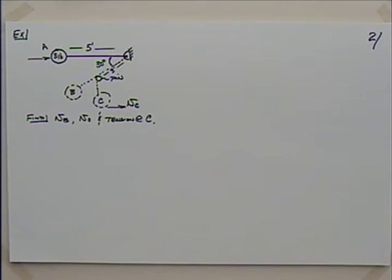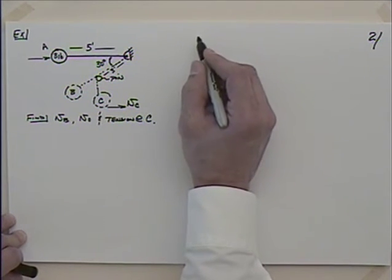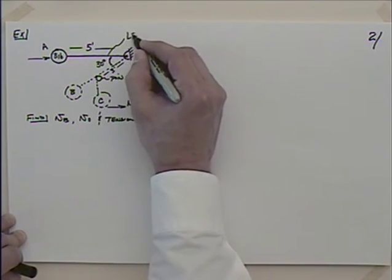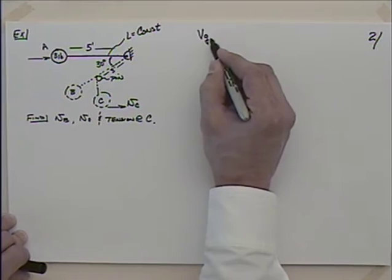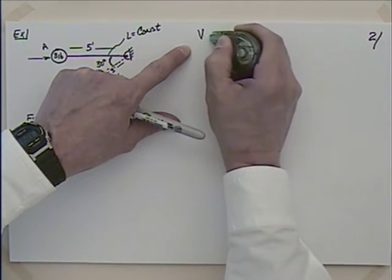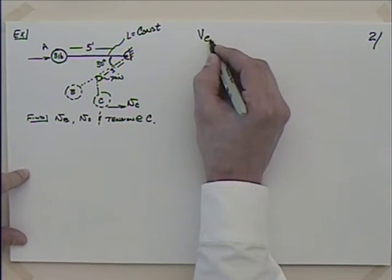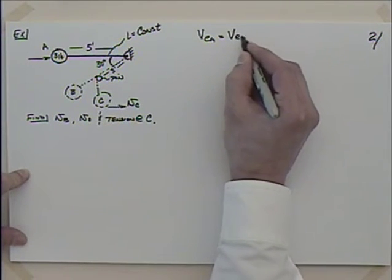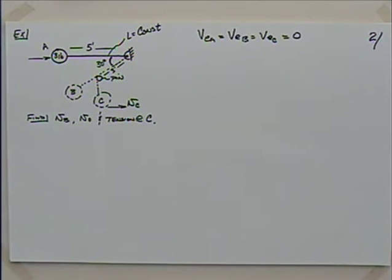Is this a conservative problem? Can we use conservation of energy? We'll neglect friction, air drag, and friction in the chord. There's no spring here — we assume the chord is constant length — so we don't have to worry about spring energy. The spring elastic energy VEA equals VEB equals VEC equals zero.